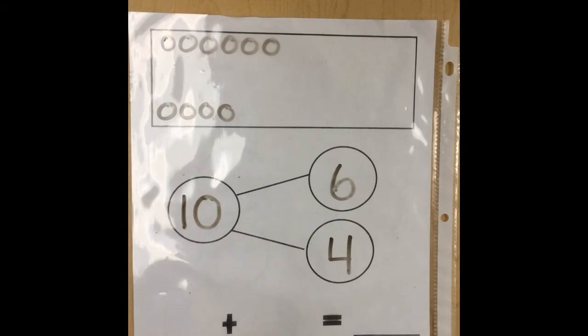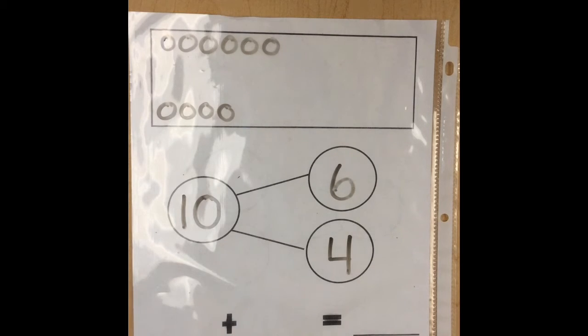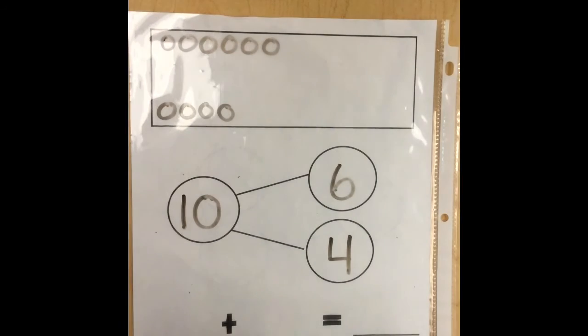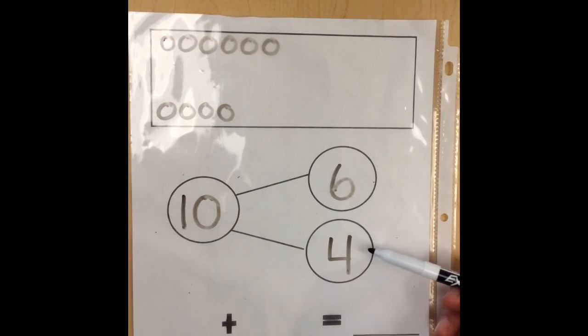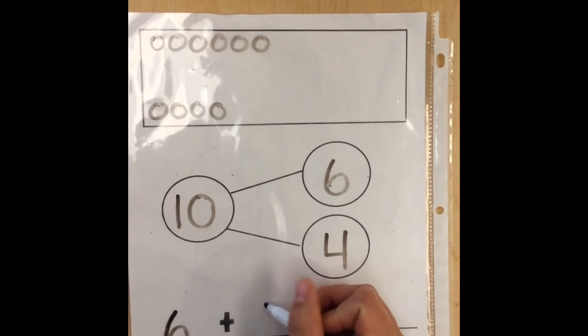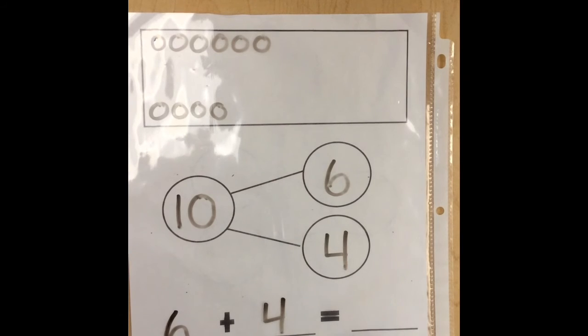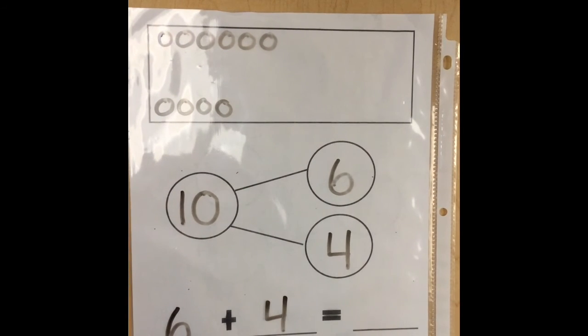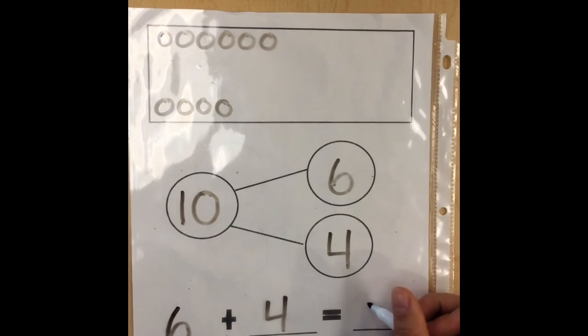Now we need to fill in our number sentence. Remember, part plus part equals the whole. You try first. Let's start with our parts. I have six plus four. Six plus four equals my whole. What's my whole? Yes, ten is my whole.